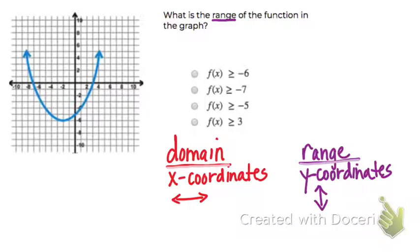If we take a closer look at this graph, we'll notice that there are arrows here at the end. We're just seeing a portion of this graph.